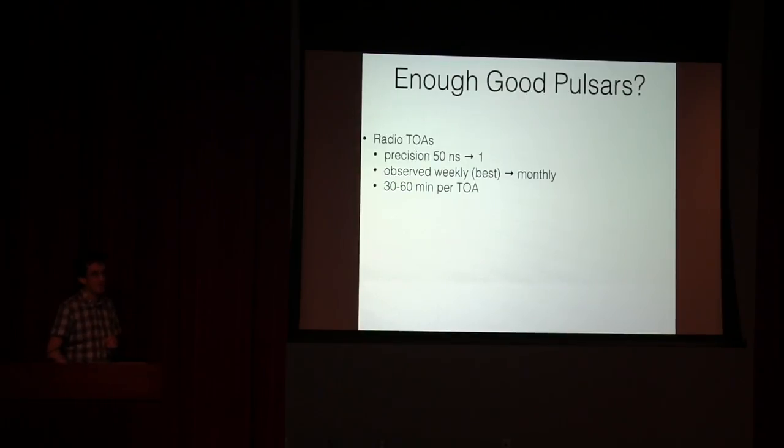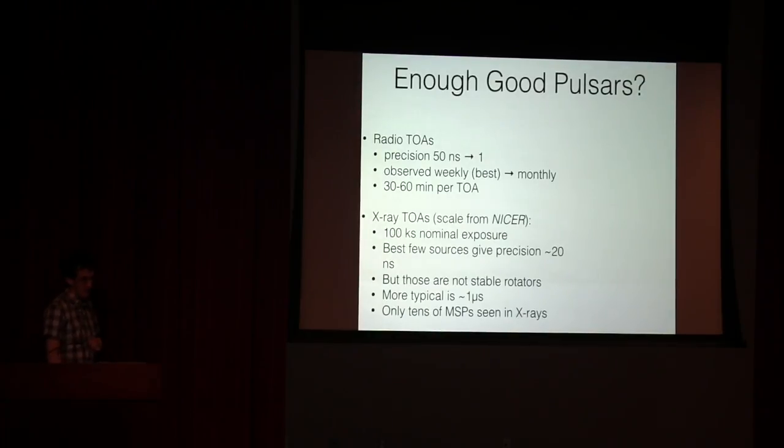So how might this scale in the future if you take something like Strobe X, scaling from intermediate results with NICER? You have 100 kilosecond nominal exposure. The best few sources will give you a precision on the order of 20 nanoseconds, which is quite good. It's better than we're doing in the radio right now. But those sources are the ones that are not intrinsically stable rotators. Most of the ones that you'll see are actually going to be more in the few hundred nanoseconds, the one microsecond regime.